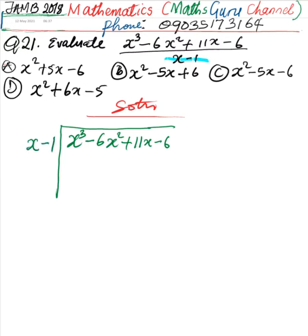First, we divide x cubed by x, which gives us x squared. So x squared times x is going to be x cubed. And x squared multiplied by negative 1 is going to be negative x squared. Now we are going to do subtraction here. x cubed cancels with x cubed.